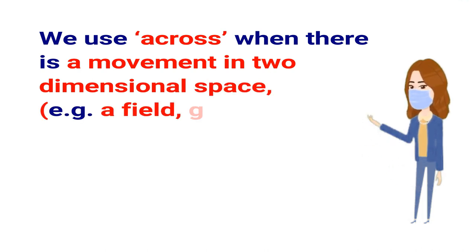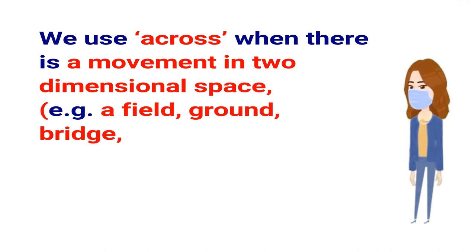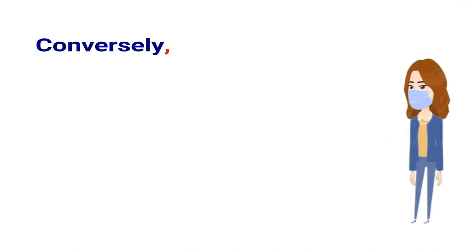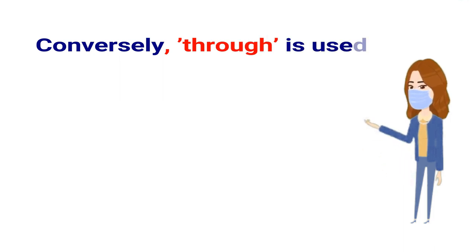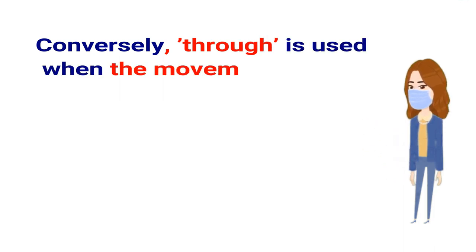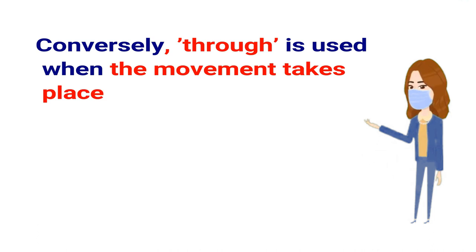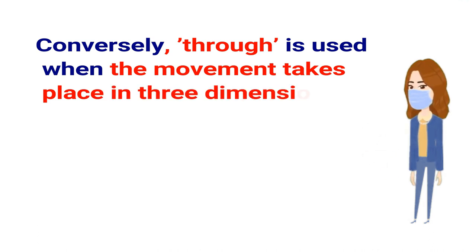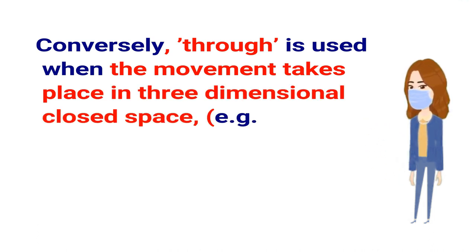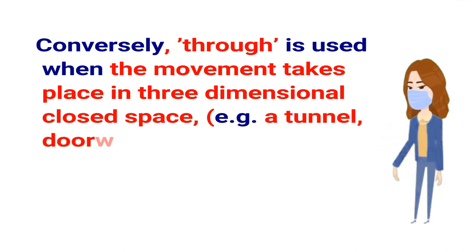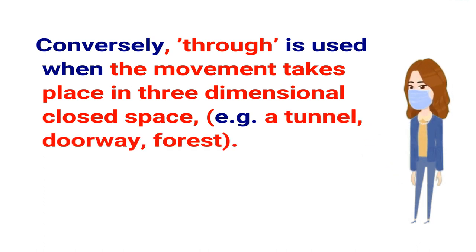Let's recapitulate. We use 'across' when there is movement in two-dimensional space — for example, a field, ground, bridge, or river. Conversely, 'through' is used when the movement takes place in three-dimensional closed space — for example, a tunnel, doorway, or forest. Thank you.